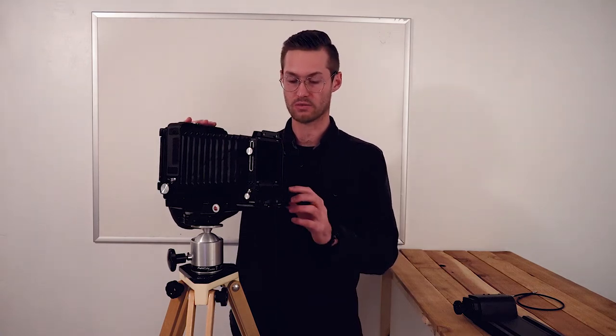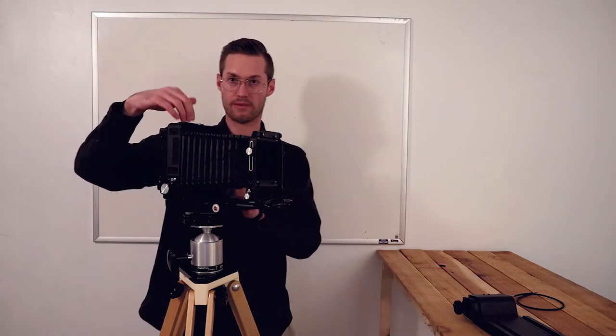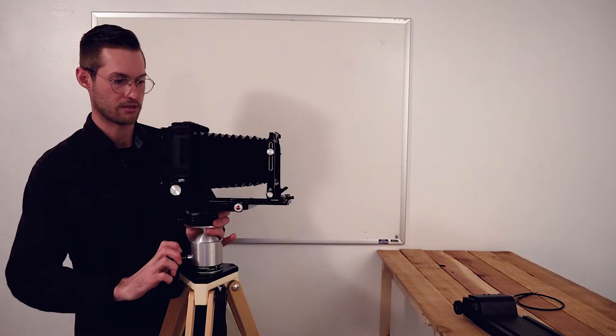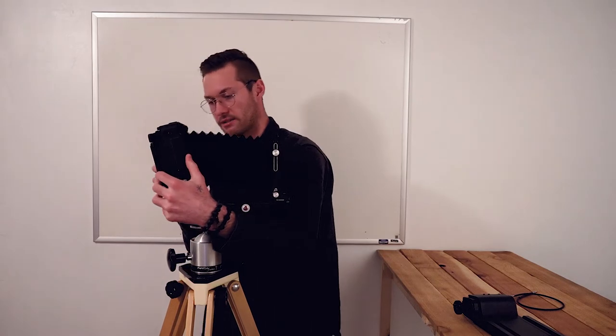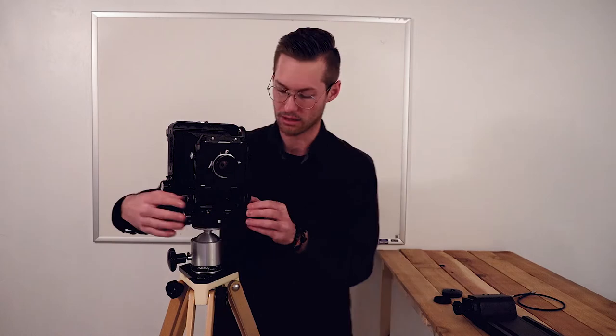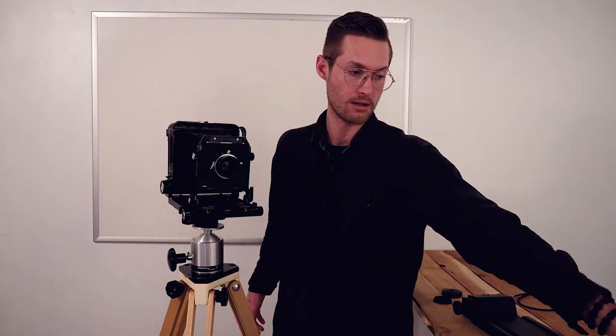If you saw my video about my tiltable Hasselblad body, this has a similar feature, and that's why this camera is popular with landscape photography. As you can see here, it has this bellows and it has this back where the film goes. It tilts back just like this and tilts forward. With this camera, since you can angle the lens from the film in many directions, you can manipulate your focal plane to focus on two focal points. The idea is that you can focus on a foreground and a background at the same time. The way you focus this camera is by moving the bellows.